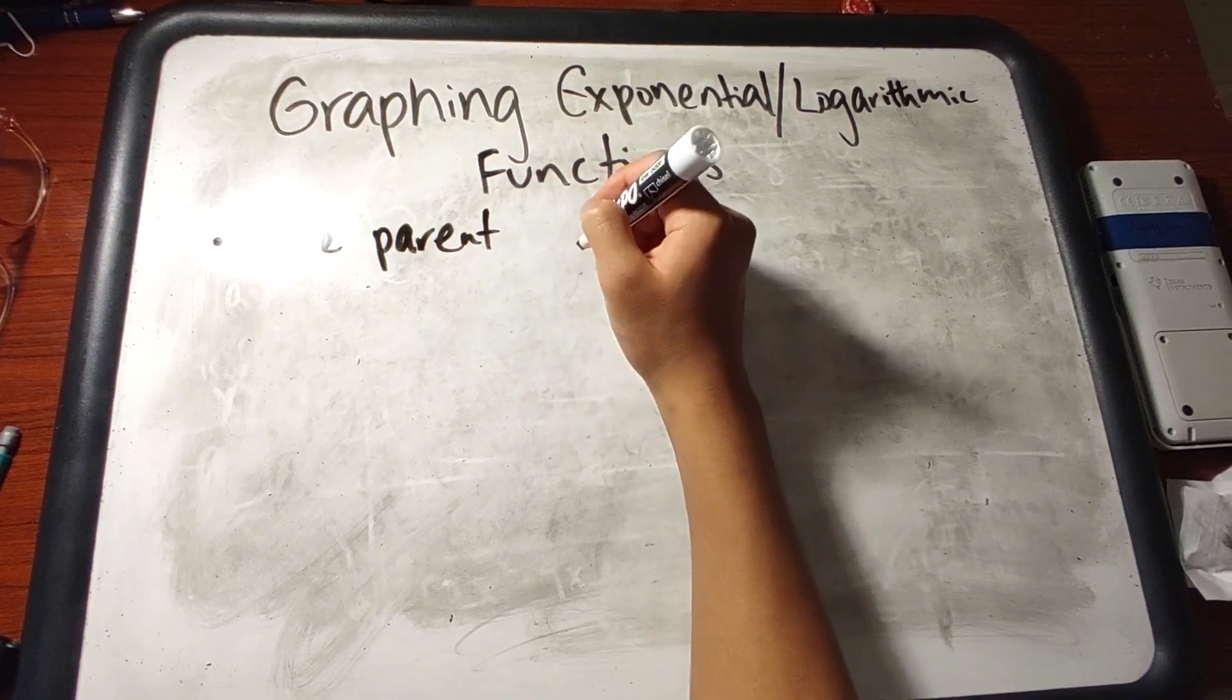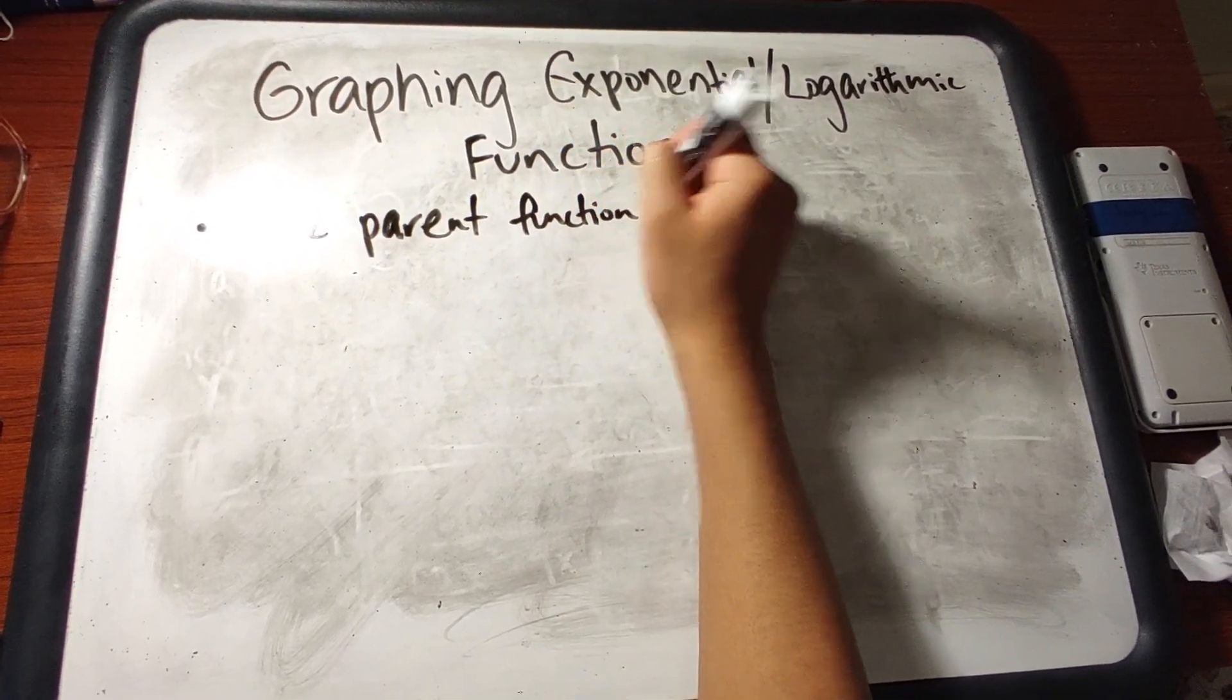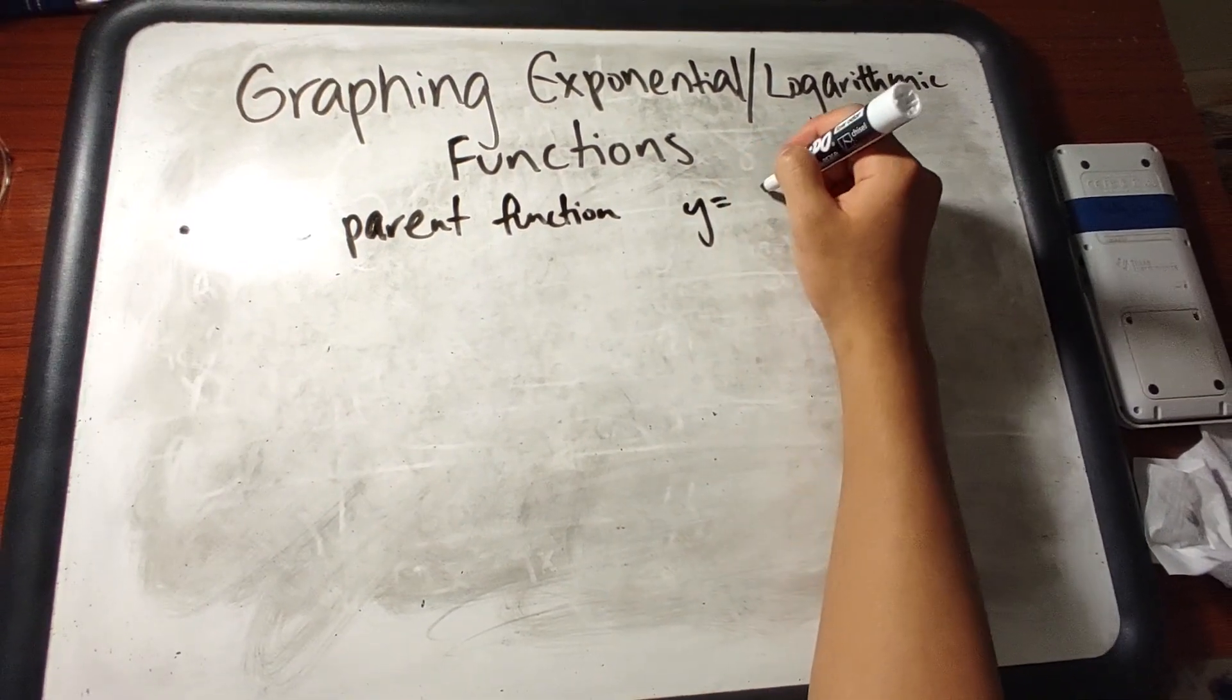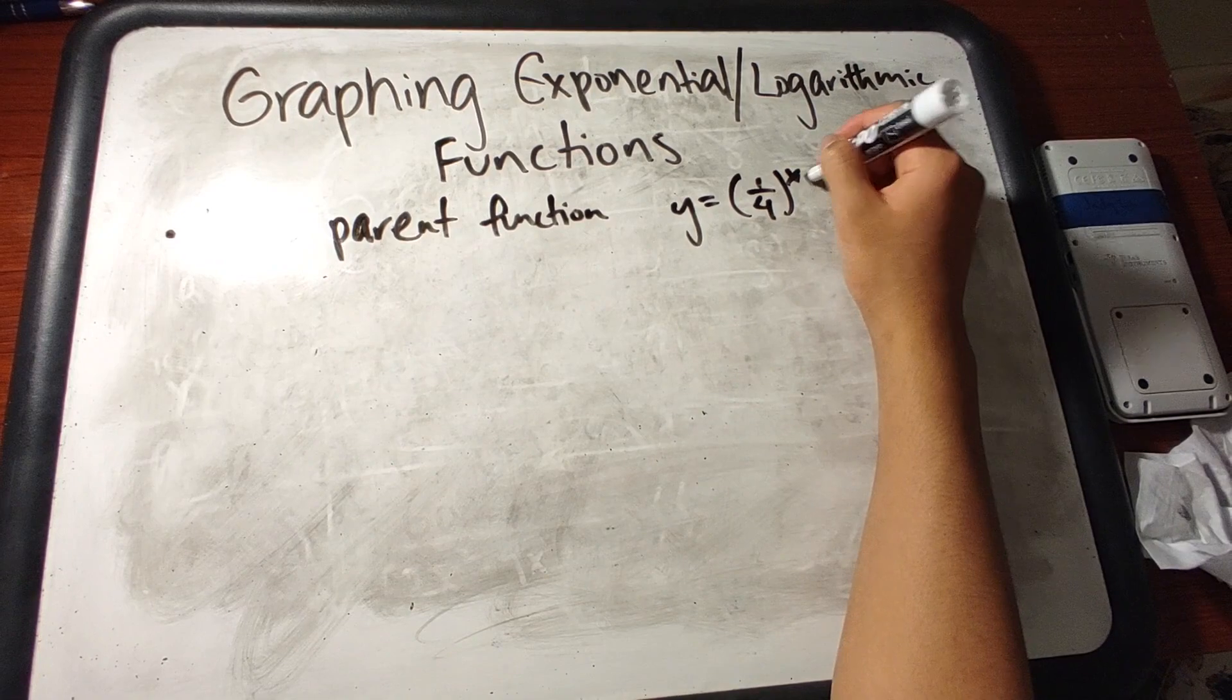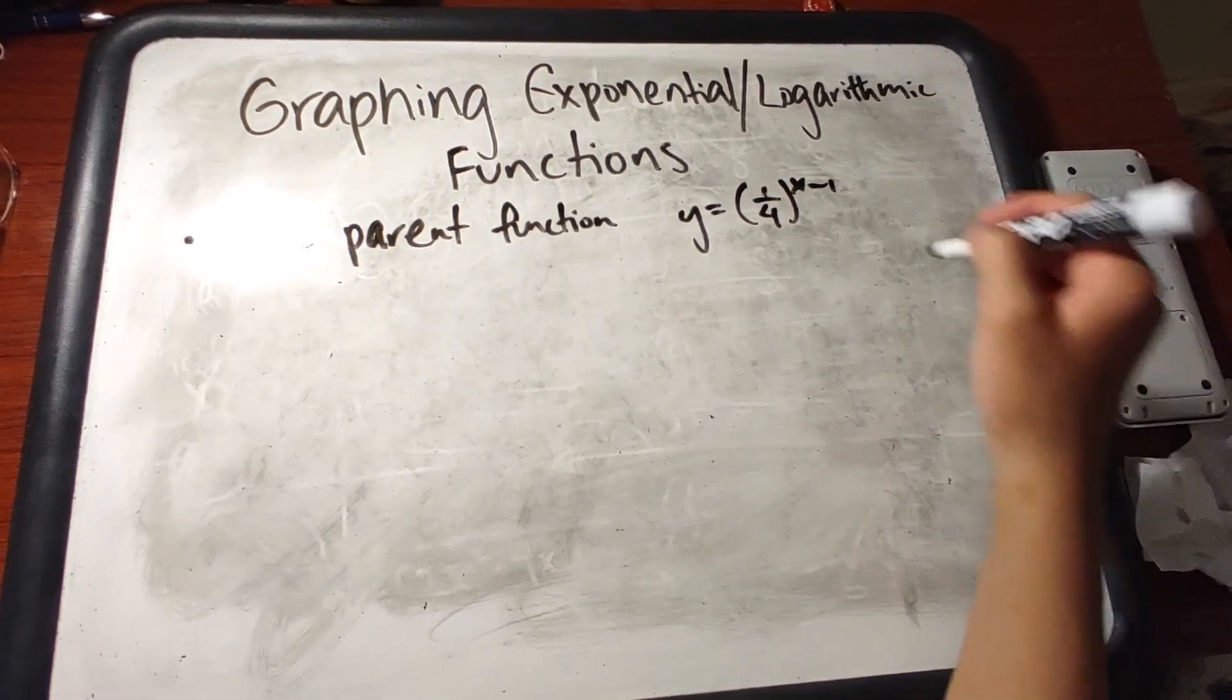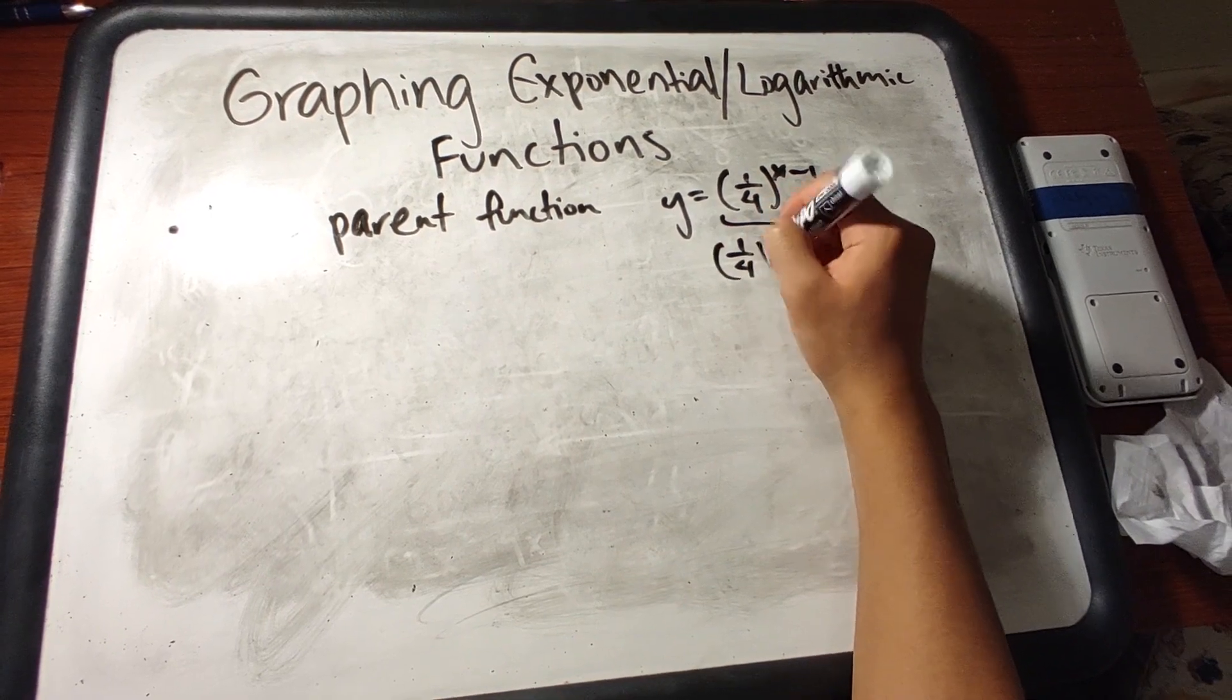For example, if the entire function is like (1/4)^x minus 1 or something like that, the parent function would just be (1/4)^x.